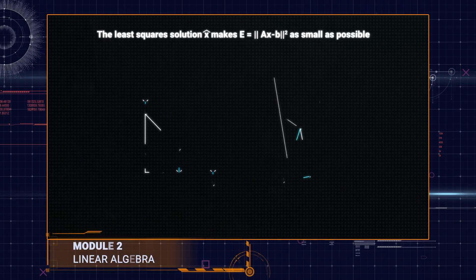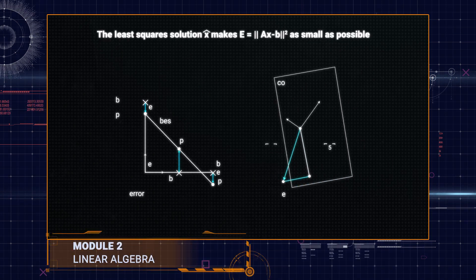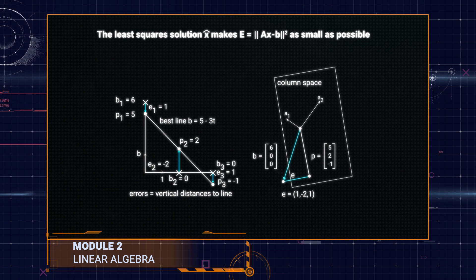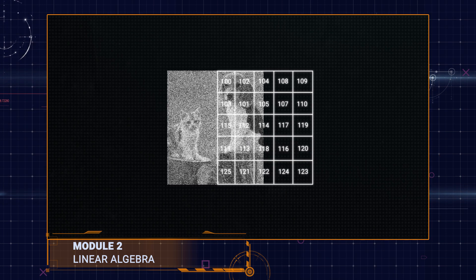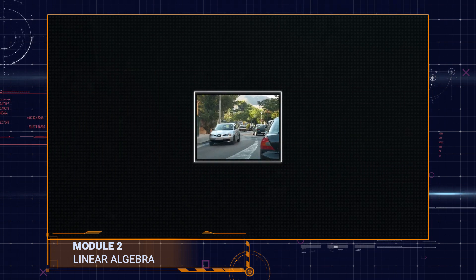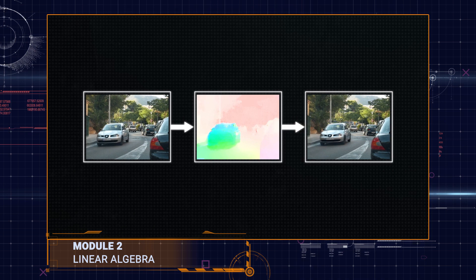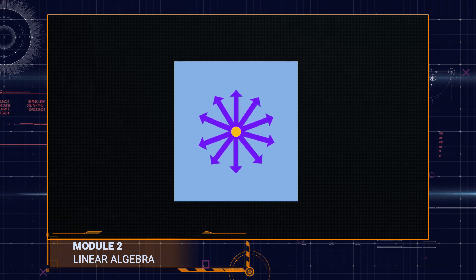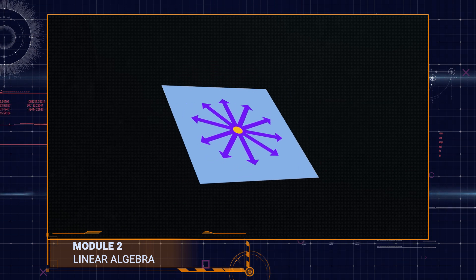Module two covers linear algebra to teach computers how to differentiate between images of different objects and images of the same object taken from different angles. Mathematical models like vector spaces and orthogonal spaces are vital for computer vision.